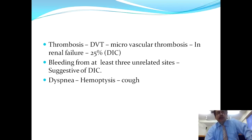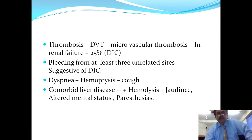Thrombosis or DVT may also occur due to macrovascular thrombosis, and renal failure can occur in about 25% of chronic DIC cases. Bleeding from at least three unrelated sites is suggestive of DIC. The patient may have dyspnea, hemoptysis, or unexplained cough. Co-morbid liver disease with hemolysis and jaundice can also be found. The patient may also have an altered conscious level and feelings of paresthesias.